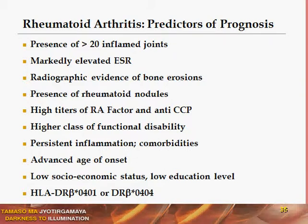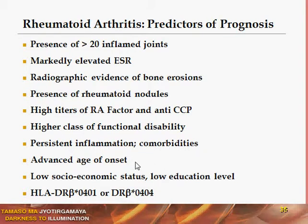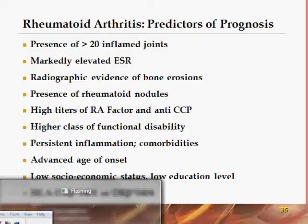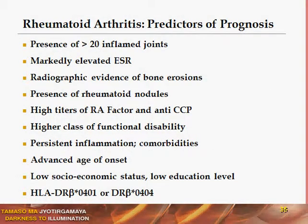What are the predictors of poor prognosis in rheumatoid arthritis? They include: involvement of more than 20 inflamed joints, markedly elevated ESR, X-ray evidence of bone erosions, presence of rheumatoid nodules, high titers of anti-CCP and rheumatoid factor, higher class of functional disability (class 3 and 4), persistent inflammation, comorbidities, advanced age at onset, low socioeconomic status, low educational level, and HLA type positivity for DRB1*0401 or 0404.